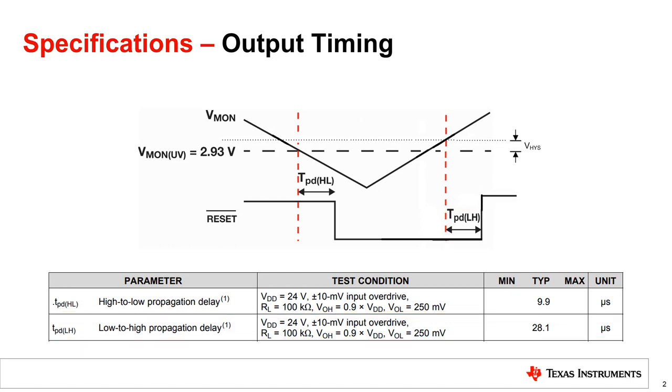In this example, when Vmon crosses Vmon UV of 2.93 volts, TPDHL will be 9.9 microseconds. Or in other words, it will take the supervisor 9.9 microseconds for its reset output to change from a high logic level to a low logic level.